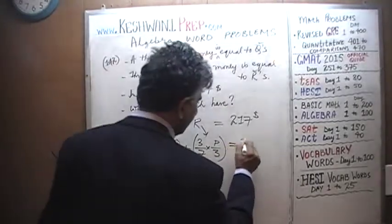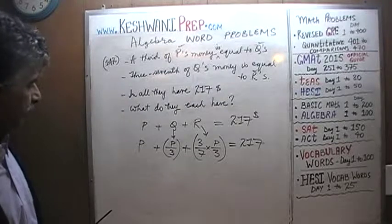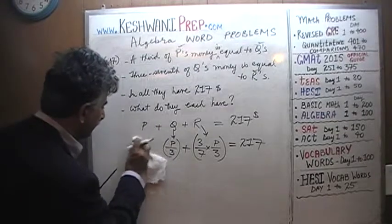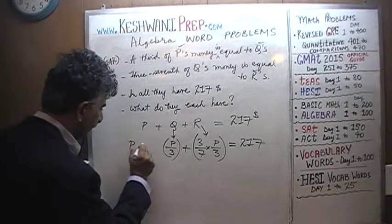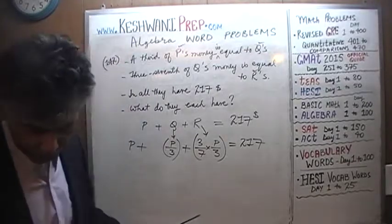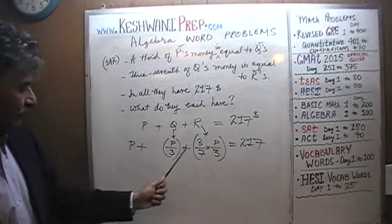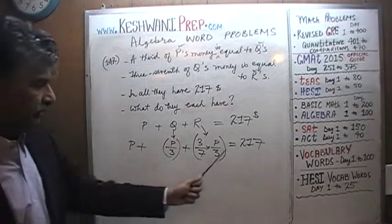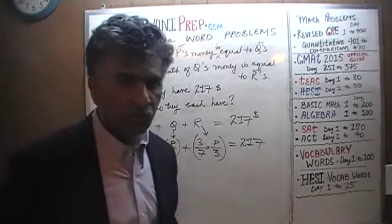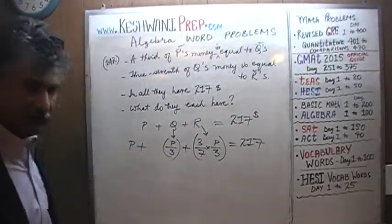And that has to equal 217. I need a little bit more room. We're going to start our work. We have a denominator of 7 times 3 here. If we can get the same denominator here of 21, and 21 here, and 21 here, we can forget about the denominator.